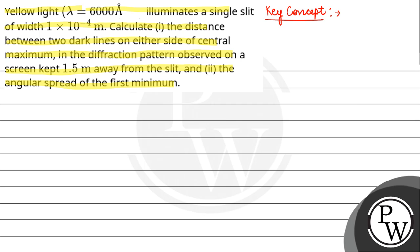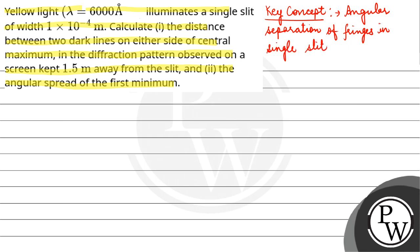The key concept here is the angular separation of fringes in single slit diffraction. In single slit diffraction, θ = λ/a, where θ is angular separation, λ is the wavelength, and a is the width of the slit.